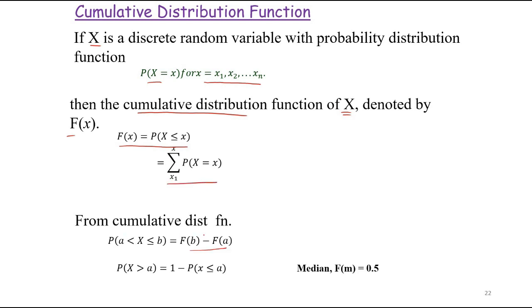From the cumulative distribution function: P(a < X ≤ b) = F(b) − F(a), and P(X > a) = 1 − P(X ≤ a). The median M satisfies F(M) = 0.5.